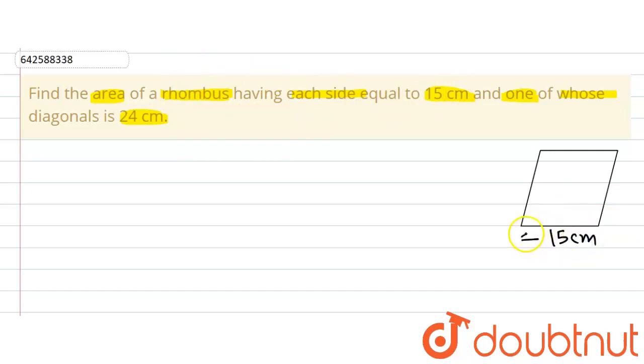We are given one side of the rhombus that is 15 centimeters. We denote the side of the rhombus by A, so A equals 15 centimeters. We are given one of the diagonals. We denote this diagonal by D1 and it equals 24 centimeters.